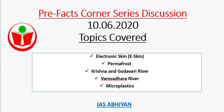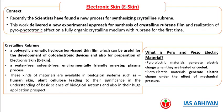Hello friends, welcome to Pre-Facts Corner series discussion. Today we are going to cover electronic skin, permafrost, Krishna and Godavari River, Vamsadhara River, and microplastics. The first important article to discuss is electronic skin. Recently, scientists have found a new process for synthesizing crystalline rubberine.